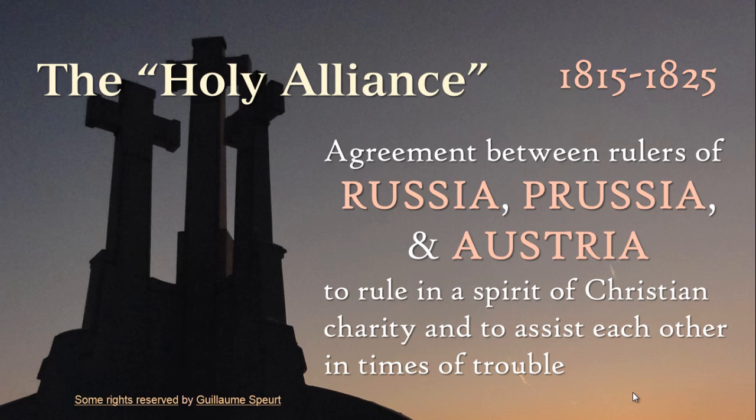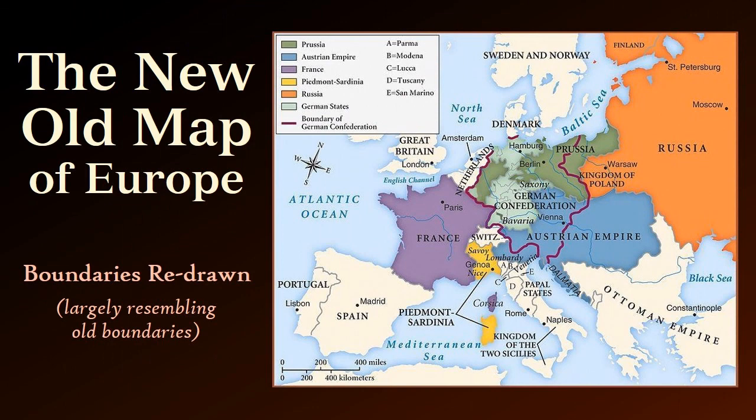Another association that came out of the Congress of Vienna is the Holy Alliance, which lasted for about ten years. This was an agreement between Russia, Prussia, and Austria — the three absolutist powers of Central and Eastern Europe — to rule in a spirit of Christian charity and assist each other in times of trouble. What that really means is that whenever there's a revolutionary movement, the rest will band together and help crush it. It sounds very Christian but it's really about maintaining power. Britain declined to join, not wanting to get into such close association with these absolutist powers.